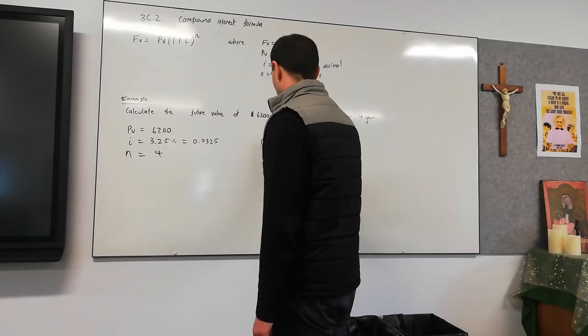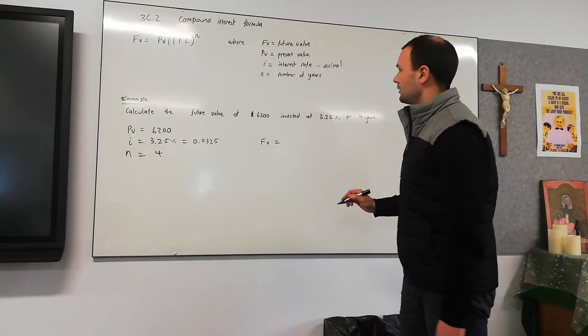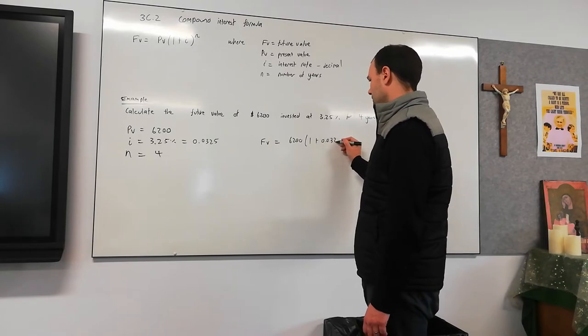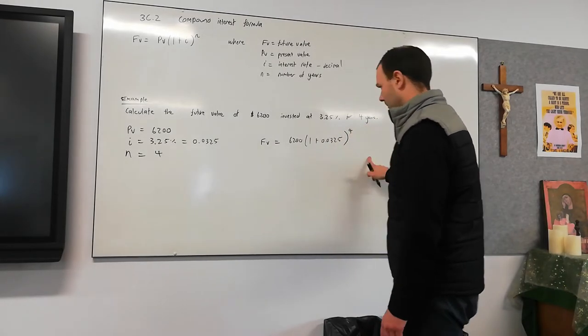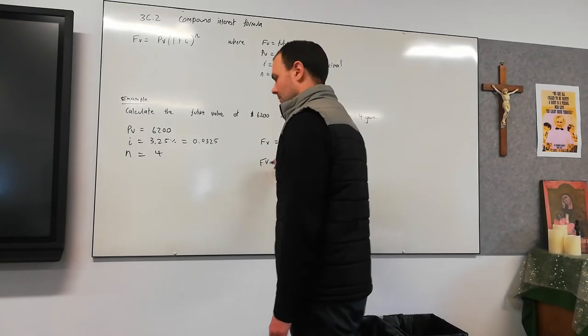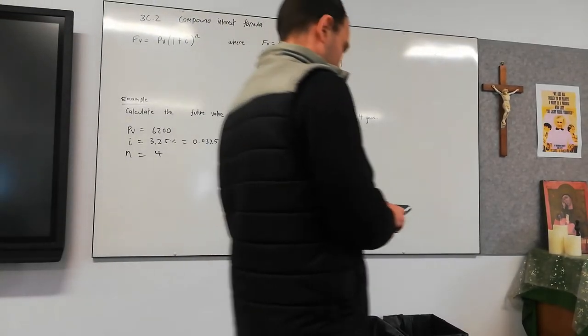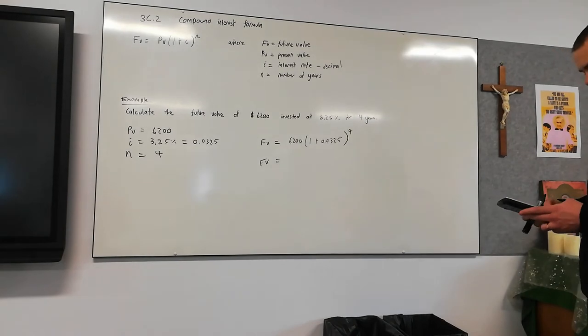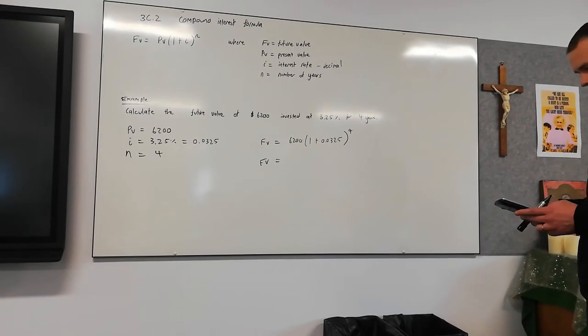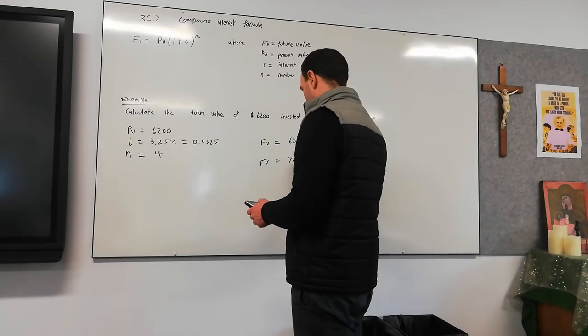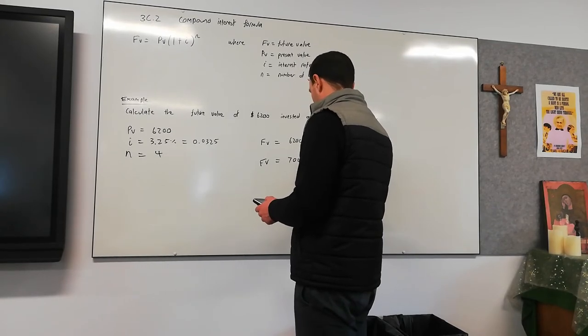If we plug all that information into the formula, our future value is going to be 6,200 times (1 plus 0.0325) to the power of four. Let me just crunch that. $7,046.15.